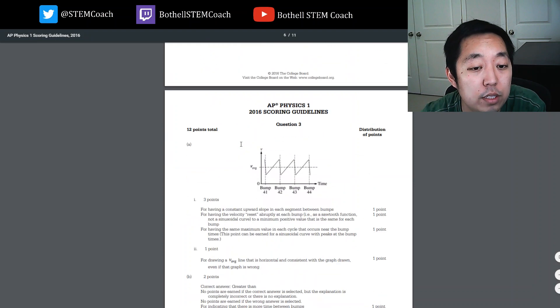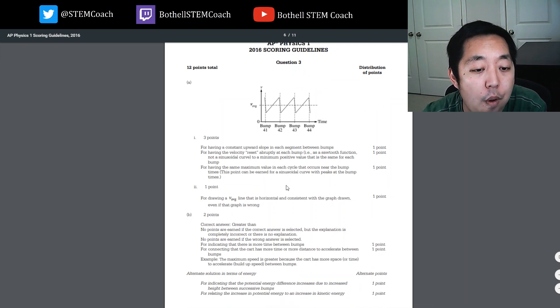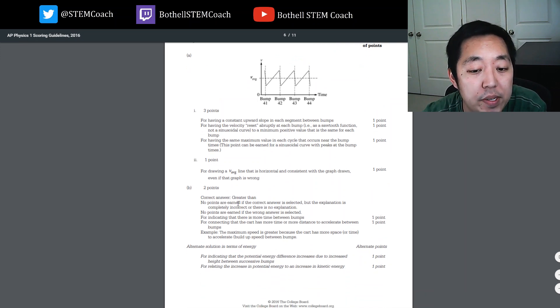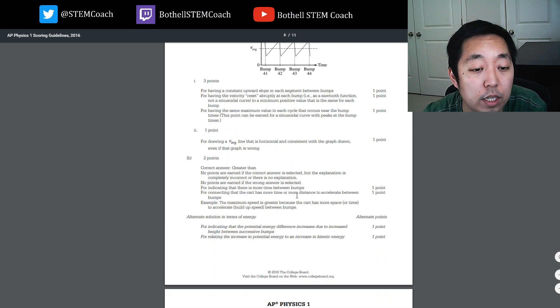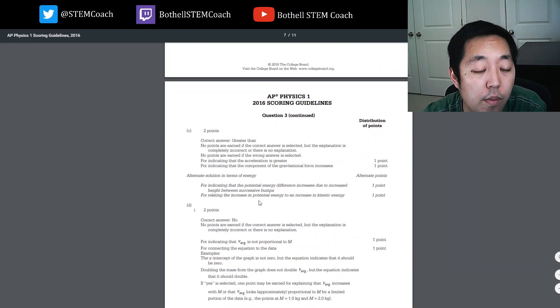So let's look at the scoring guidelines. Question three. Yep, constant slope and it jagged like that. Greater than. There's more time between bumps for the cart to accelerate between bumps. Yep, more space or time to accelerate and build up speed between bumps. Greater than. Indicating acceleration is greater or the component of the gravitational force increases. So that's right. You can also do it in terms of energy, which is fine.